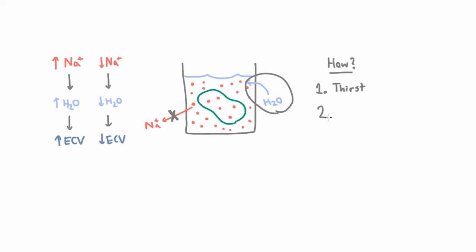And the second has more to do with kidneys. The second is changes in water excretion. And the idea there is an increase in sodium concentration is going to cause you to excrete less water. So you're going to hang on to more water so you're going to get more water in your extracellular space.